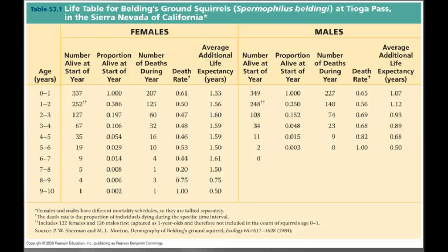Some of the AP Biology exam is very similar to the science portion of the ACT, so you're going to see a lot of charts and graphs — get used to it. Now let's talk about demography. Demography is the study of the vital statistics of a population and how they change over time. Write that down.